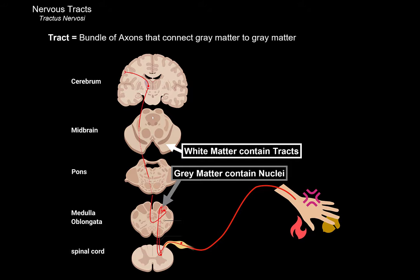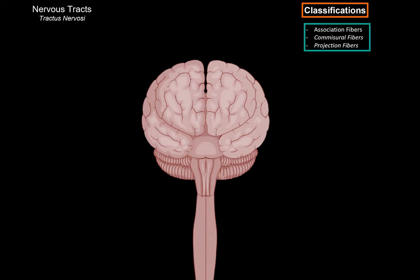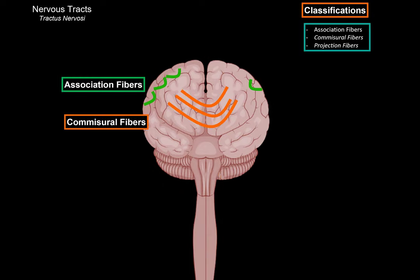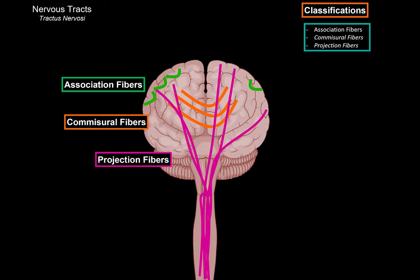Now, there are certain ways to classify these tracts. You can either classify them as association fibers, connecting adjacent structures, commissural fibers, connecting one part of the brain to the other side, or projection fibers, leading tracts up and down the spinal cord. And I'll talk more about this when I talk about the internal structures of the cerebral hemispheres, because that's when this classification becomes relevant to you.